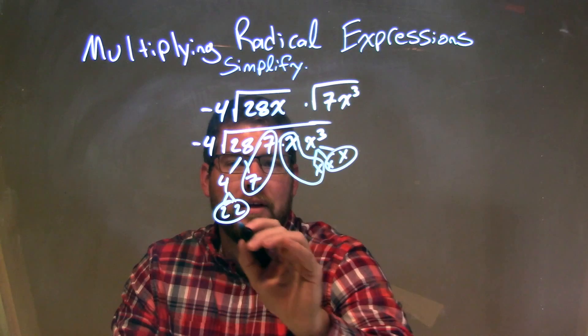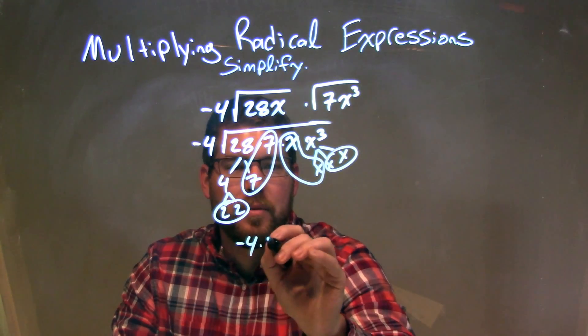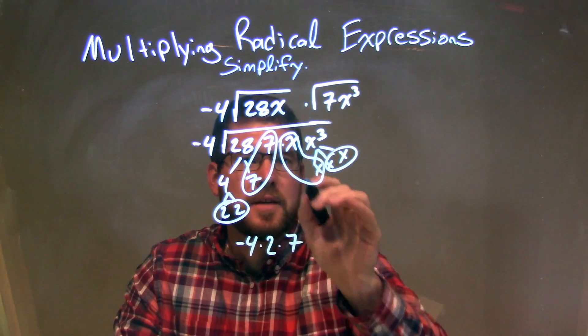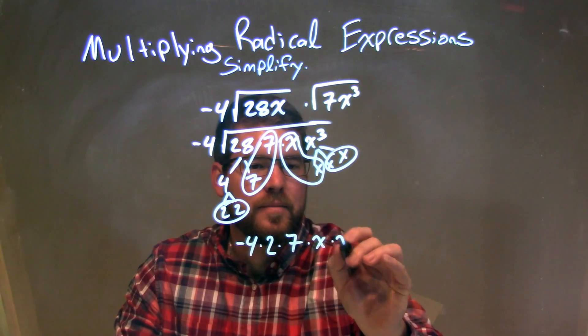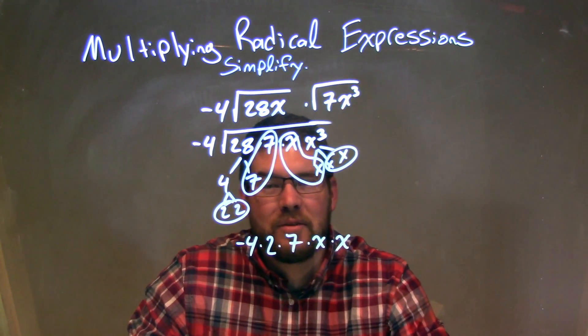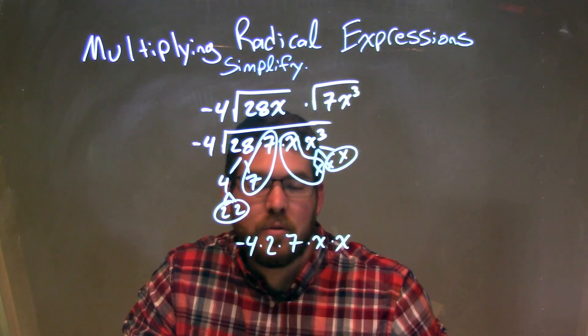So when we simplify this, we have negative 4 on the outside times a pair of 2s times a 7 times an x times the last x. And there's nothing else left inside the square root, so we don't need it anymore. It kind of disappears and it's gone.